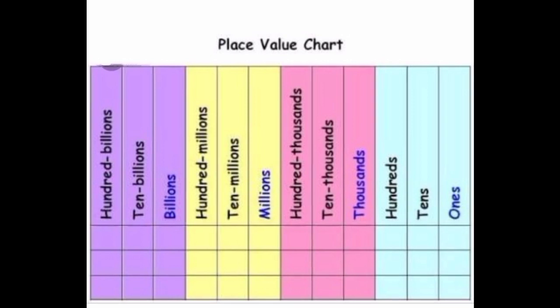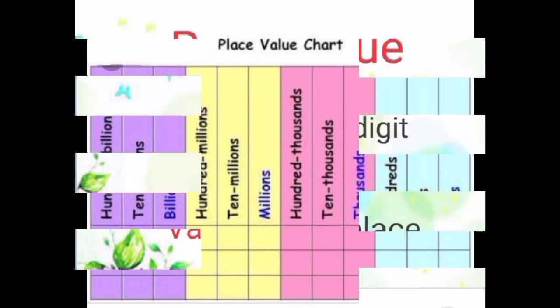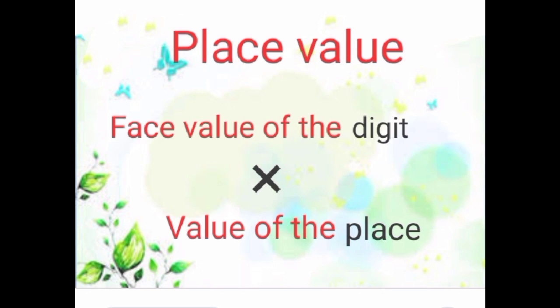Next, let me tell you what is meant by place value of a digit. First, we have to recall the place value chart. Do you know the place value chart? Yes — ones, tens, hundreds, thousands, ten thousands, hundred thousands, millions, ten millions, hundred millions, billions, ten billions, hundred billions. The place value of any digit is: we simply multiply the digit by its place. Place value equals face value of the digit multiplied by the value of the place.